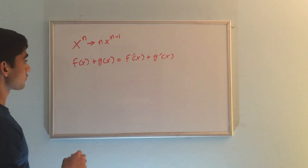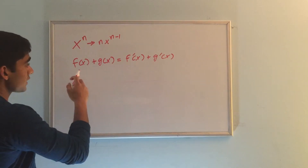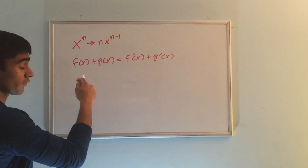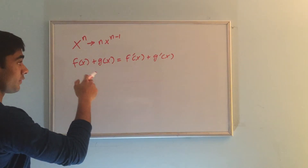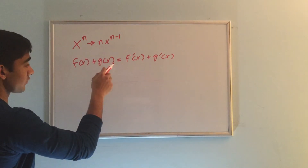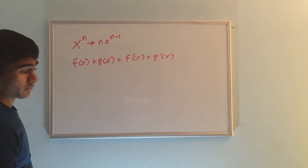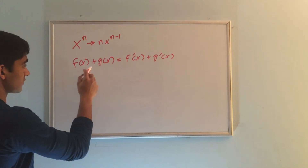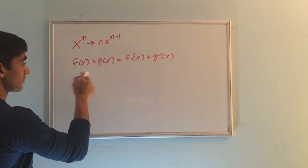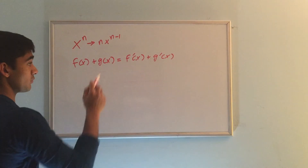The next rule you should know is that when you're adding two separate functions and you want to take the derivative of the entire entity, that derivative equals the derivative of each independent function added to each other. So for example, if you have f of x plus g of x, the derivative of this entire quantity equals f prime x plus g prime x.